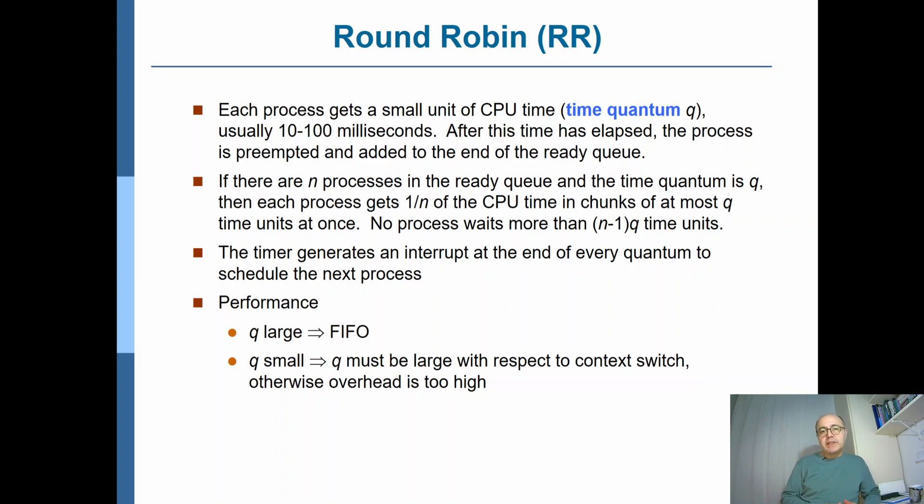In round-robin scheduling, each process is given some time quantum of length, say two milliseconds. So if the process cannot complete its CPU burst during the time quantum, it's preempted from the CPU and another process is scheduled into the CPU for its time quantum.